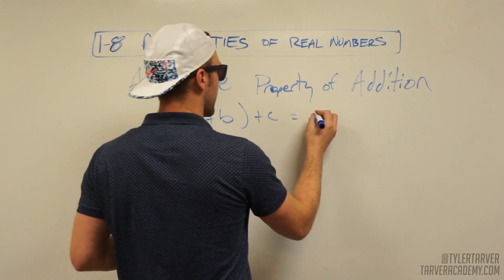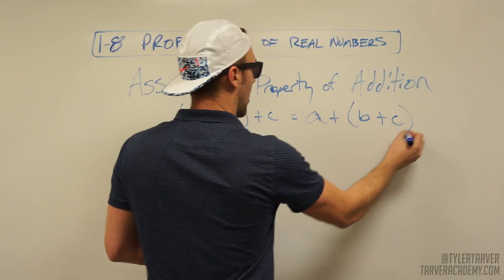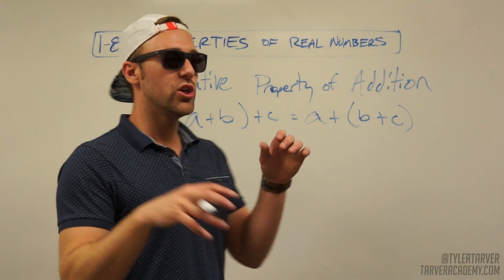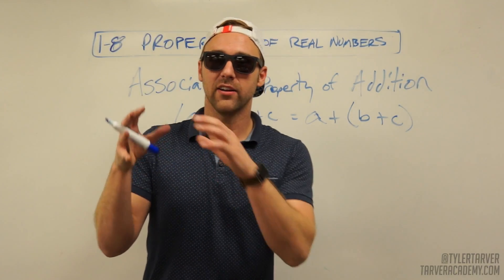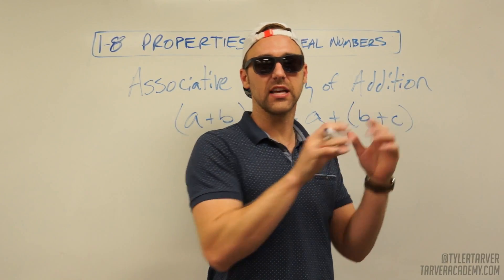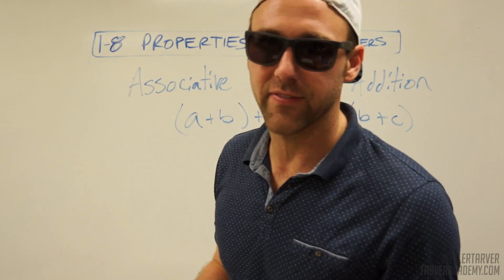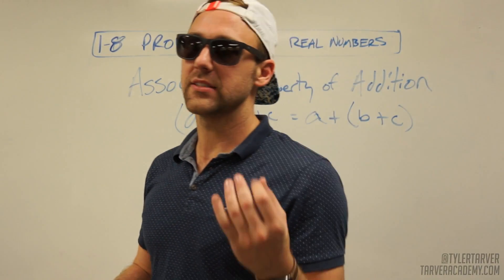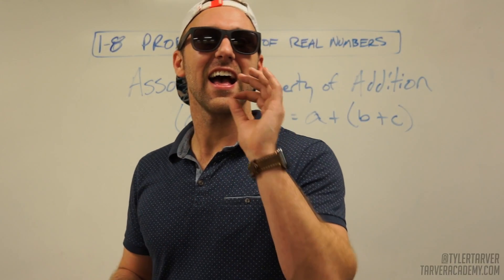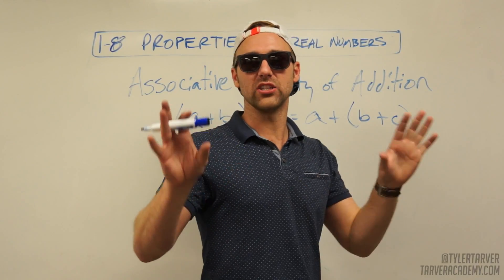But I'm going to show you this because I want to round out the set. What the associative property of addition says is that you can add three numbers in any order and still get the same answer. It's something you won't need to know very often or utilize very often, but it's something that needs to happen for you to be able to solve equations.